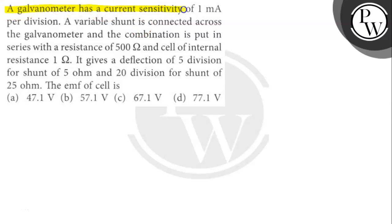A galvanometer has a current sensitivity of 1 mA per division. A variable shunt is connected across the galvanometer and the combination is put in series with a resistance of 500 ohm and cell of internal resistance 1 ohm. It gives a deflection of 5 divisions for shunt of 5 ohm and 20 divisions for shunt of 25 ohm. The emf of cell is.